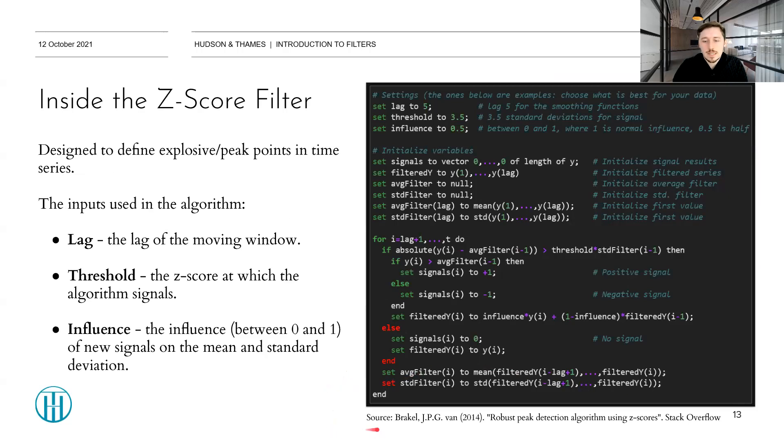Here is a pseudocode exactly from that answer on Stack Overflow, and we'll briefly go over it. But first, the inputs used in this algorithm are the following: The lag, which is the lag of the moving window being used. The threshold or the Z-score at which the algorithm signals, or that's n number of robust standard deviations at which the signal will be generated. And also the influence, which is the value between 0 and 1, which measures the influence of new signals on the mean and standard deviation.